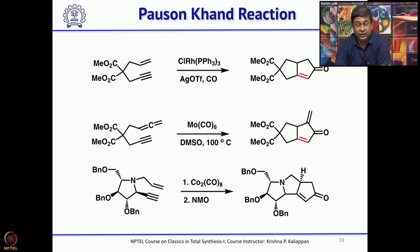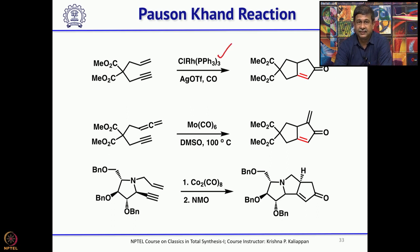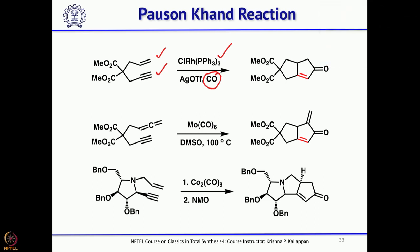One can also use other reagents. For example, one can use Wilkinson's catalyst — you still have a double bond and a triple bond, but here the carbonyl source requires the reaction to be run under a carbon monoxide atmosphere, and you also need silver triflate to get the corresponding bicyclic compound. One can also use molybdenum hexacarbonyl in DMSO, refluxing at 100 degrees, to do the same thing. There is also an interesting variant where instead of a double bond, you have an allene; the internal double bond of the allene undergoes the Pauson-Khand reaction.